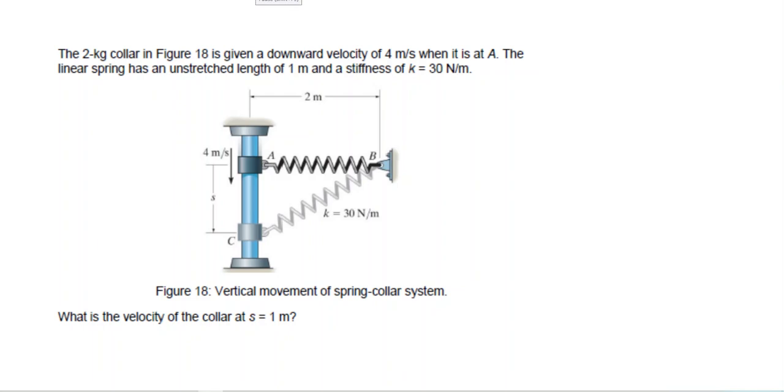Hi everyone, this is another exam question. The 2 kilogram collar is given a downward velocity of 4 meters per second when it is at point A. The linear spring has an unstretched length of 1 meter, so the unstretched length would be only 1 meter, and the spring stiffness is 30 newtons per meter.